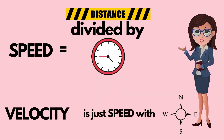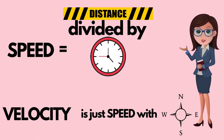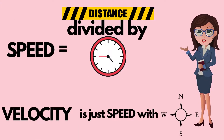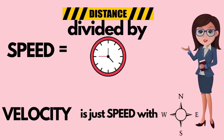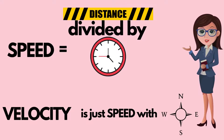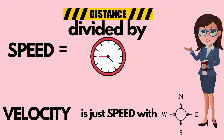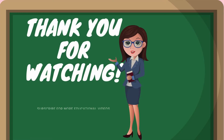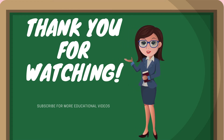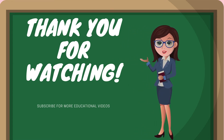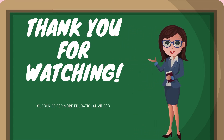To recap the difference between the two terms — speed and velocity: speed is just distance divided by time, while velocity is just speed with direction. I hope you have learned something. Until next video, bye-bye!